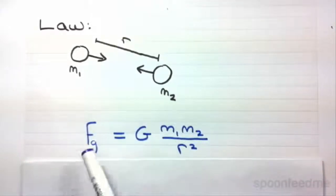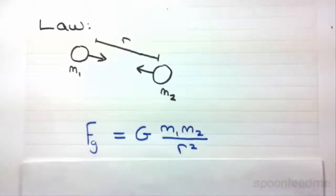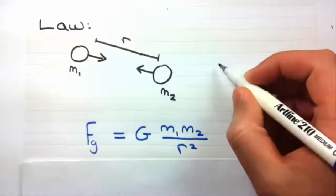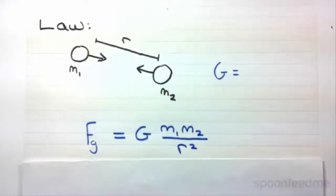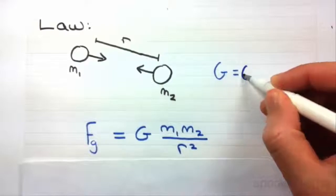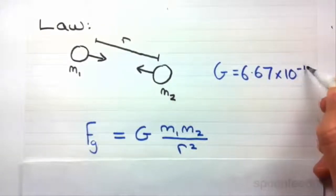The gravitational attraction between two bodies, m1 and m2, is equal to g, which is the universal gravitational constant, which I'm just going to write up here, is equal to 6.67 times 10 to the minus 11.